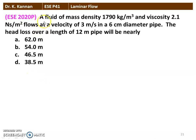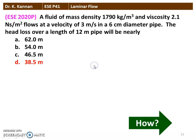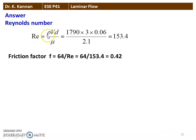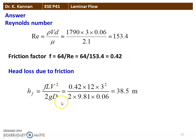The next question from the 2020 question paper: A fluid of mass density 10,790 kg/m³ and viscosity 2.1 N·s/m² flows at a velocity of 3 m/s in a 6 cm diameter pipe. The head loss over a length of 12 meters will be nearly — the correct answer is 38.5 meters. Reynolds number Re = ρVD/μ = 10790 × 3 × 0.06 ÷ 2.1 = 153.4. Friction factor f = 64/Re = 64/153.4 = 0.42. Head loss HF = fLV²/2gD = 0.42 × 12 × 3² ÷ (2 × 9.81 × 0.06) = 38.5 meters.